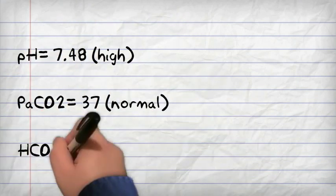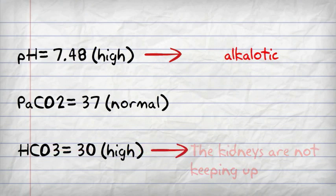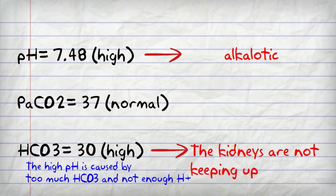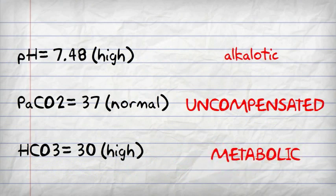Here we have a high pH, normal CO2, and a high bicarbonate. So we're alkalotic, the kidneys are not keeping up, the high pH is caused by too much bicarbonate and not enough hydrogen. And the lungs here are not helping because the CO2 is normal. So we have uncompensated metabolic alkalosis.